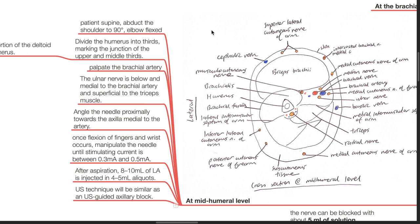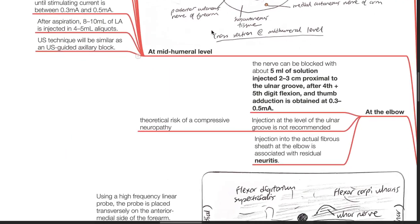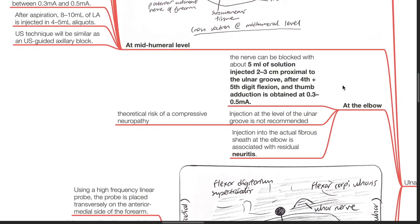Ultrasound technique will be similar to an ultrasound-guided axillary block. At the level of the elbow, the nerve can be blocked with about 5 mL of local anesthetic injected 2 to 3 cm proximal to the ulnar groove after 4th and 5th digit flexion and thumb adduction is obtained at 0.3 to 0.5 milliamps on nerve stimulation.